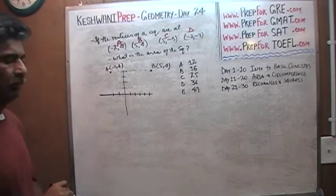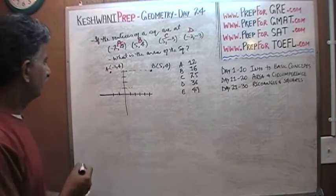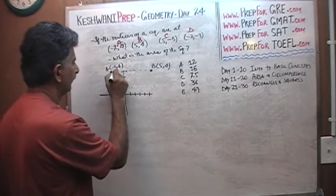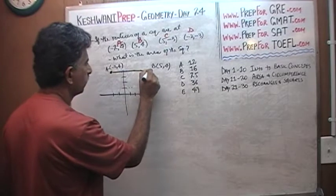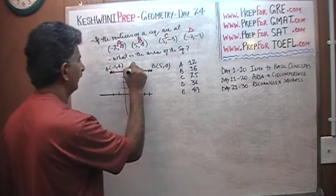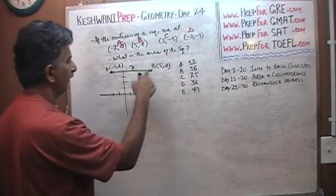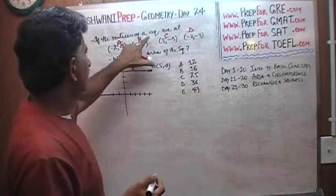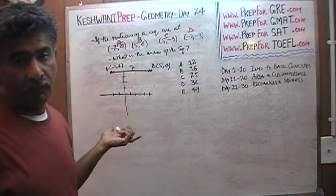This is basically all we need to figure out the answer because from here, from negative 2 to 5, from here to here, is 7, from negative 2 to 5. We have 5 on this side, 2 on this side. It's 7, and since it's a square, the other side is also going to be 7.